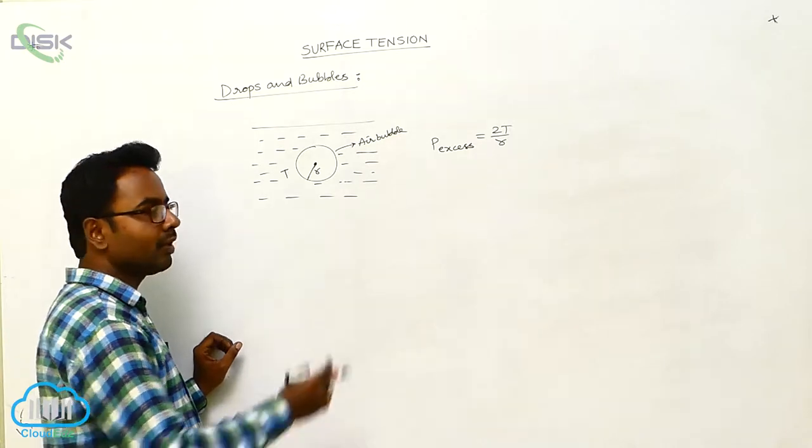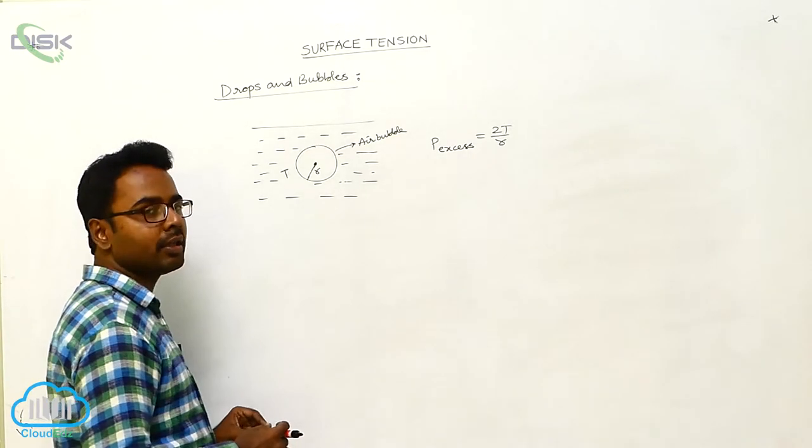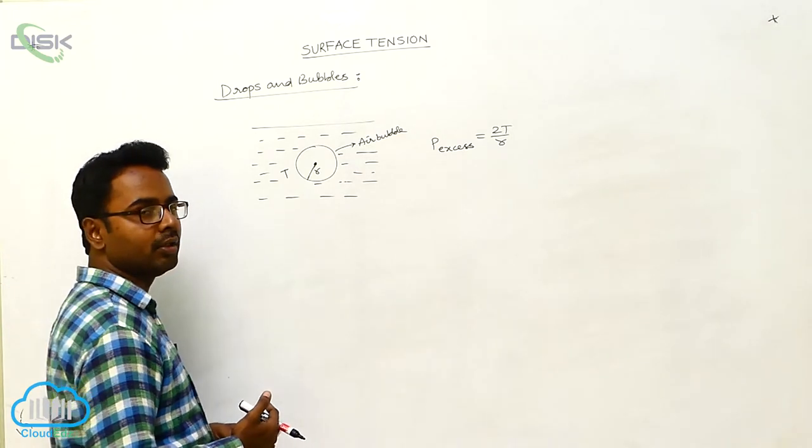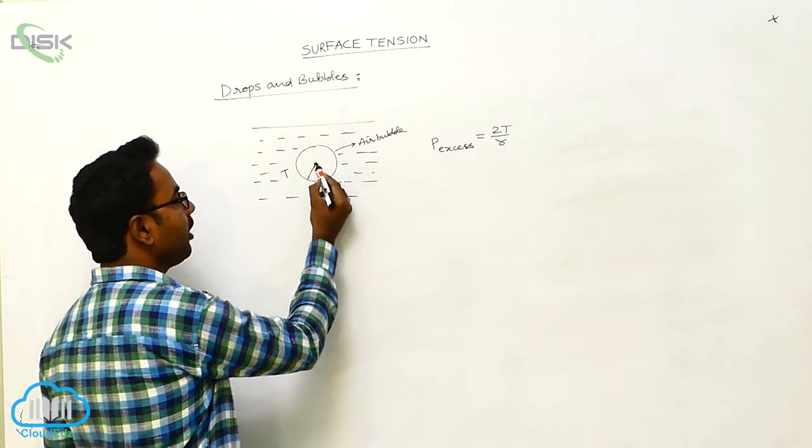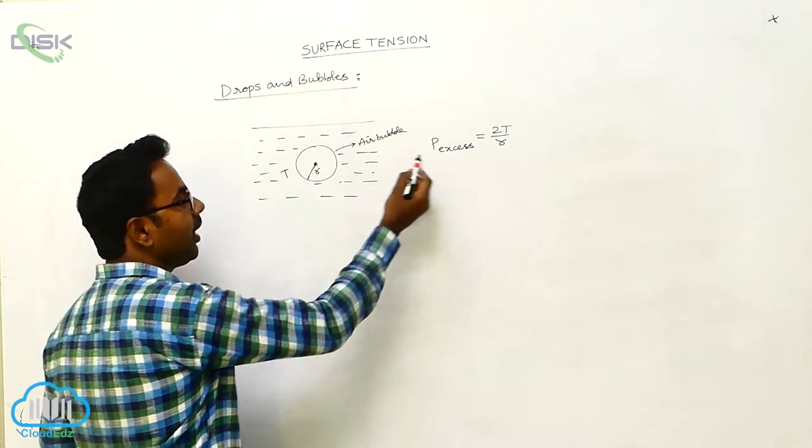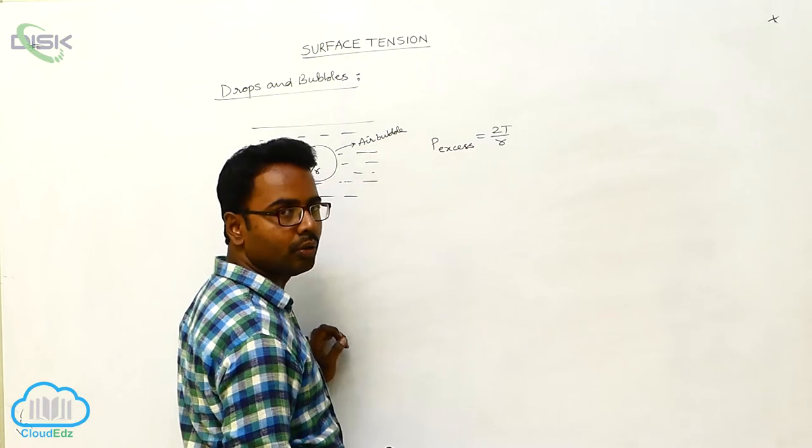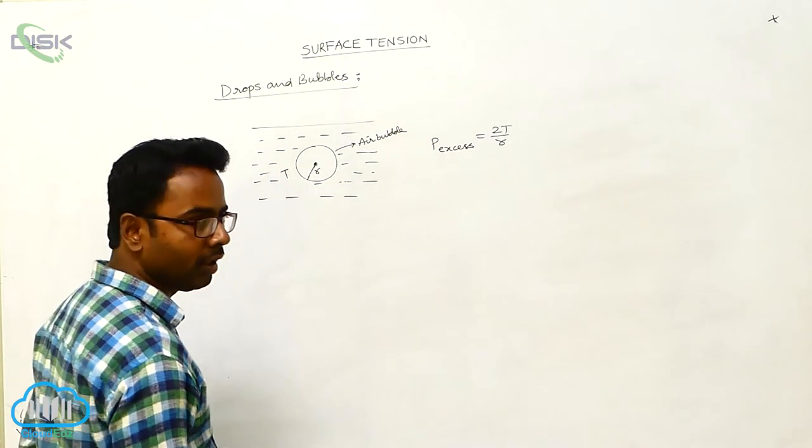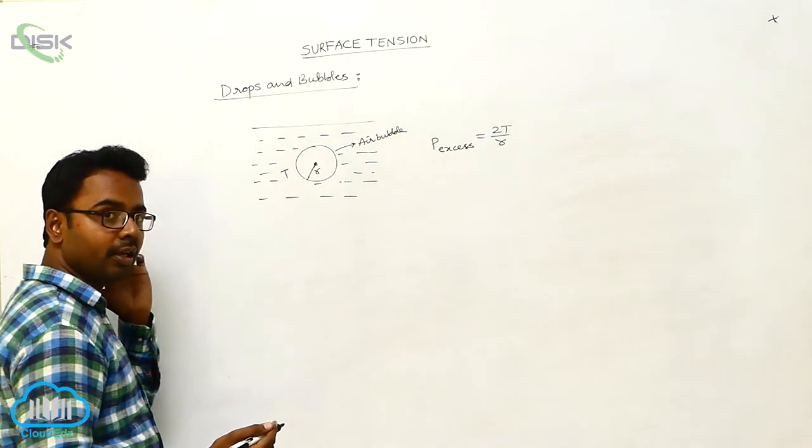It is the same as the excess pressure acting on a liquid drop. In a liquid drop also, excess pressure is 2T/R. Same as a liquid drop, inside an air bubble where it is inside the liquid, the excess pressure P_excess = 2T/R, which is the same as the excess pressure in a liquid drop.